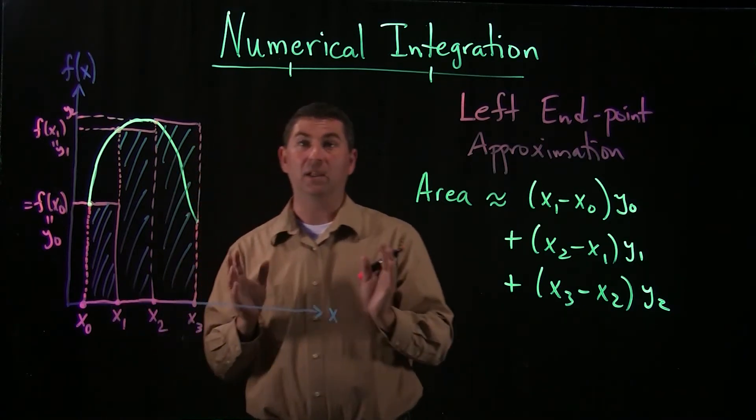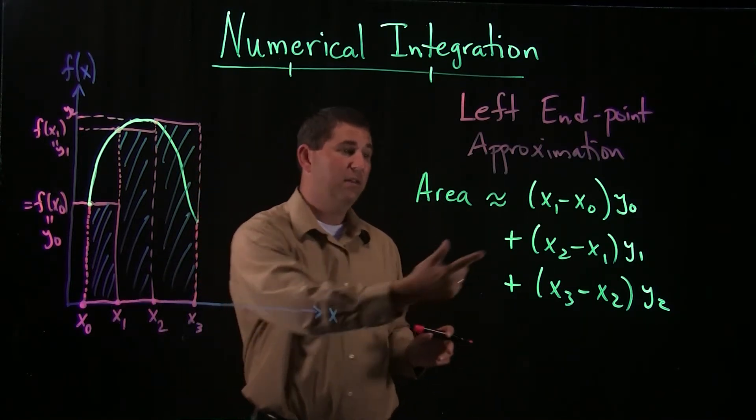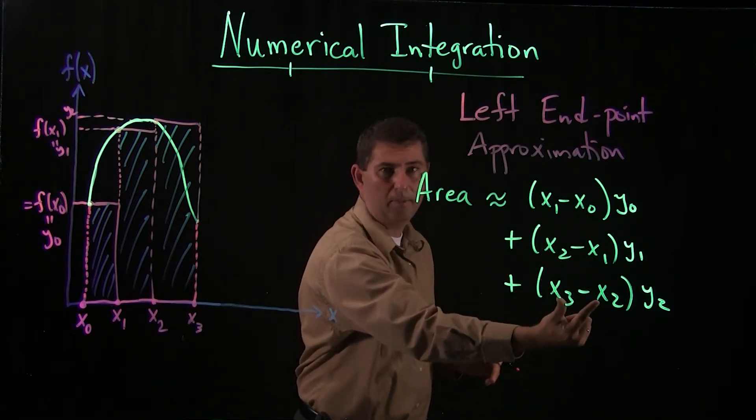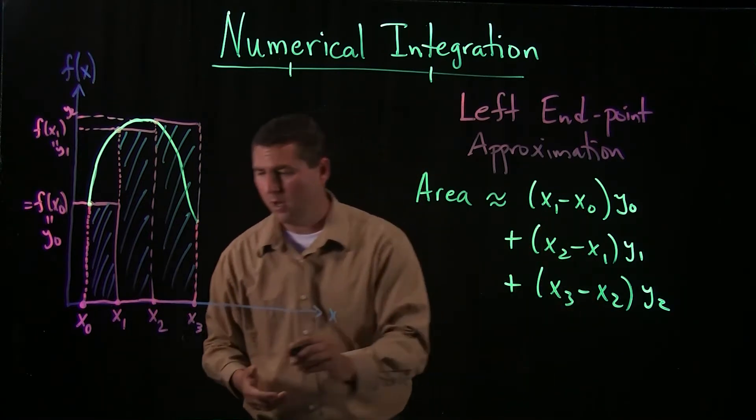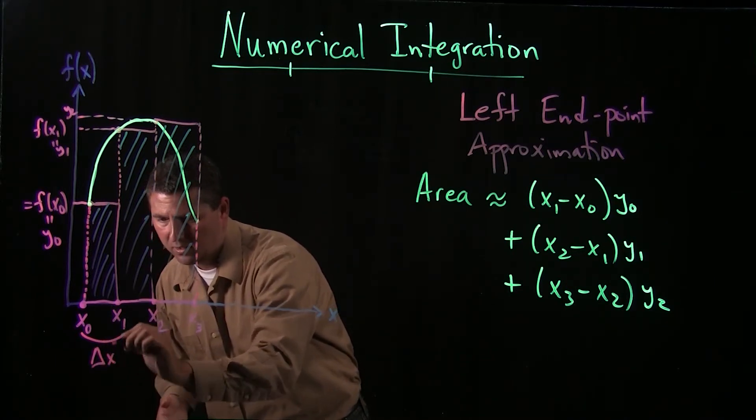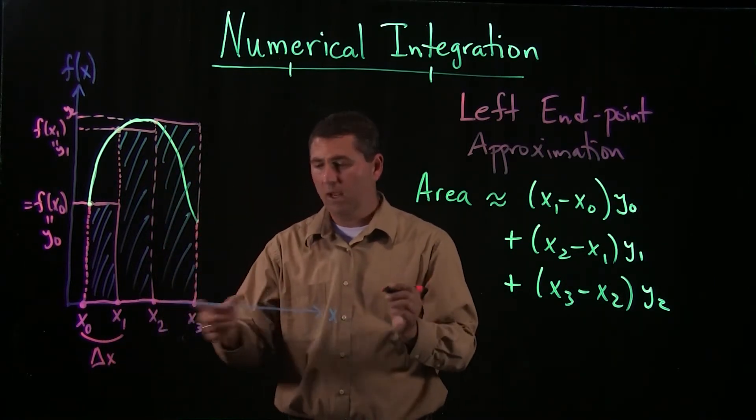And the reason we do that is so that in this formula we don't have to keep changing the base. It's just going to be the same amount. And typically, we're going to call that distance delta x. Change in x.